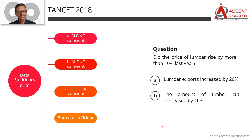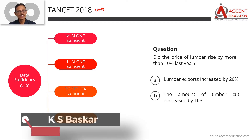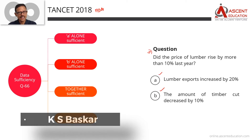Welcome to the TANSAT previous air paper solution — TANSAT 2018 MBA paper. We are looking at question number 6, Data Sufficiency question 20. In a Data Sufficiency question, there is a question followed by two statements, and we need to determine how to answer it.